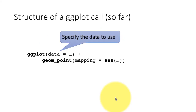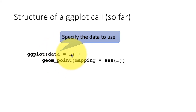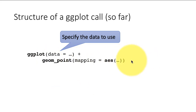So the structure of the ggplot call is: first call ggplot, then specify the name of the data frame with data = name_of_dataframe, put a plus sign, then add layers of points. If you want to add another layer, put a plus and add a new layer; another layer, plus and new layer. You can build all your plots incrementally quite easily.